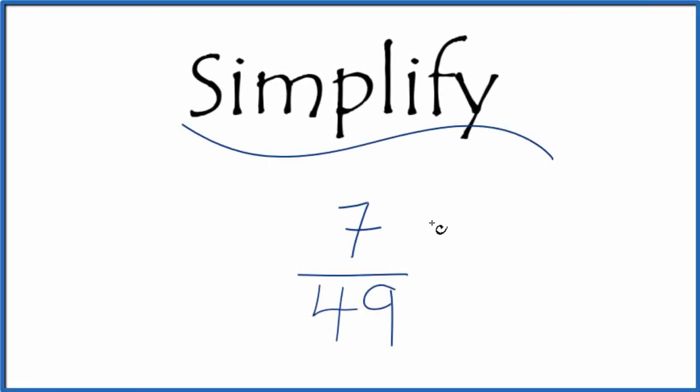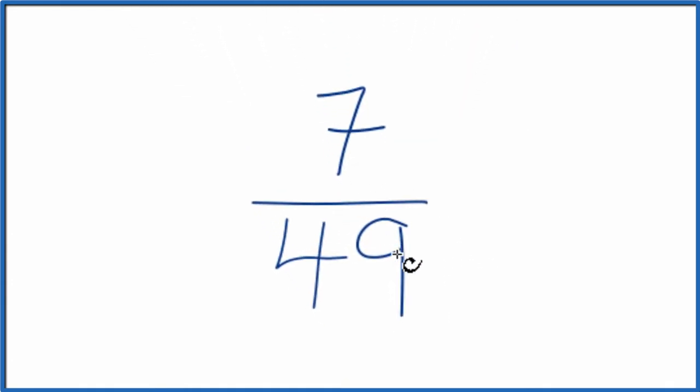If you need to simplify the fraction 7/49, here's how you do it. What we want to do is find another fraction that's equal to 7 over 49.